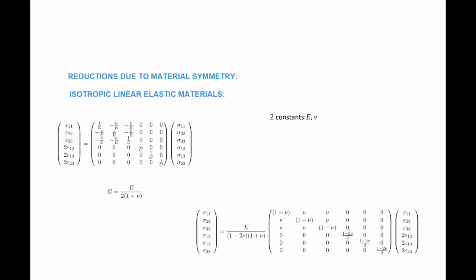The two constants traditionally used are Young's modulus and Poisson's ratio. The relationship between stress and strain using these two constants can be described either as strains in terms of stresses or stresses in terms of strains — these two matrices are the inverse of each other and are only a function of E and Poisson's ratio. The shear modulus G is actually a function of E and Poisson's ratio, so knowing E and Poisson's ratio fully defines the stress-strain relationship.